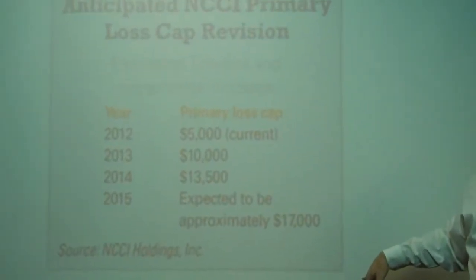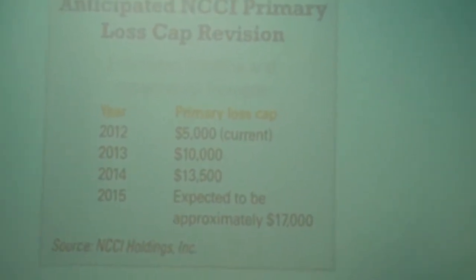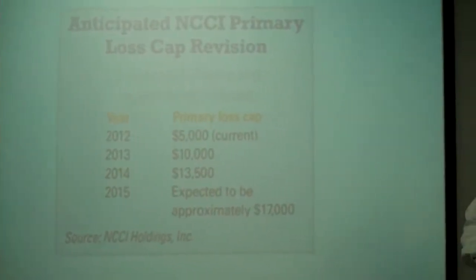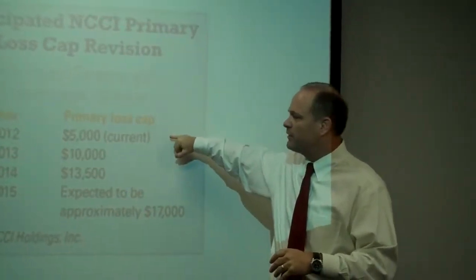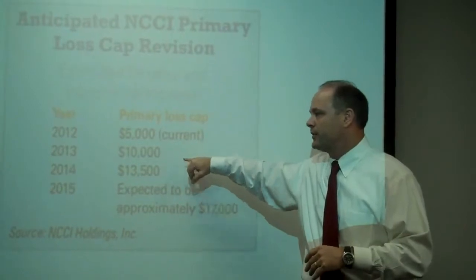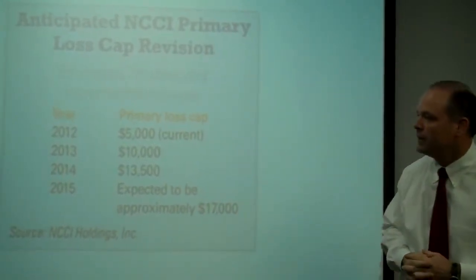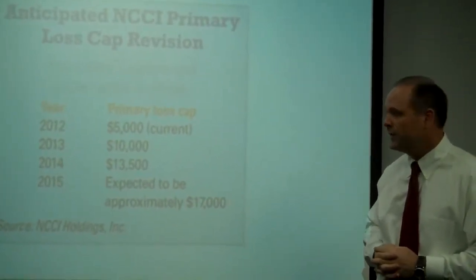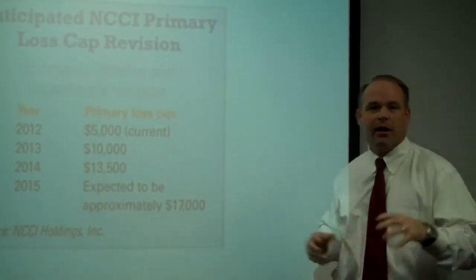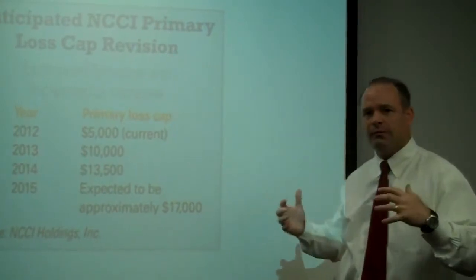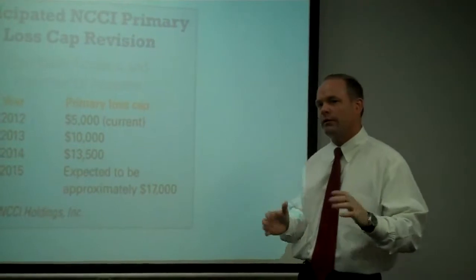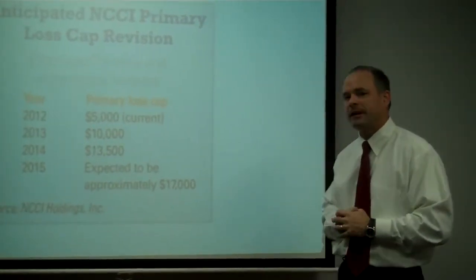This is what I went over with you earlier. Just a little slide here that you can keep to show you what the changes are going to look like moving forward. Currently, the split point is at $5,000. It is going in 2013 to $10,000, then to $13,500 in 2014. And in 2015, expected to be at least $15,000, but it's going to be based on some benchmarking. So, 2015 at this point in time is a little bit unknown.